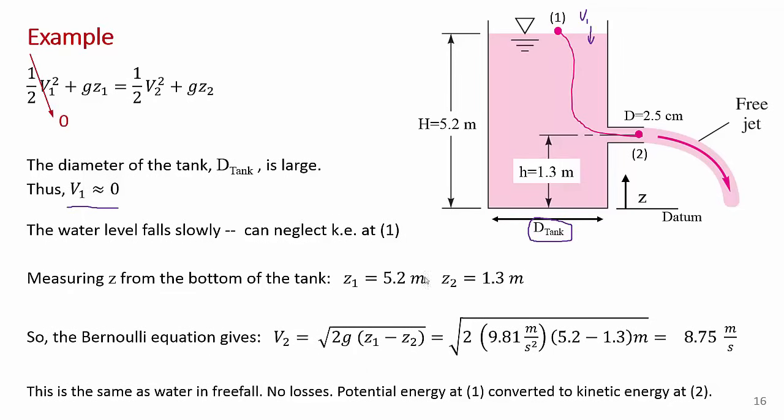Now notice here, I'm measuring the elevation z from the bottom of the tank. You can pick any convenient datum or reference line that you want. So when we, if we pick the bottom of the tank as the datum, we have z1 equals 5.2 meters, the height of the tank, and z2, the discharge point, is 1.3 meters.